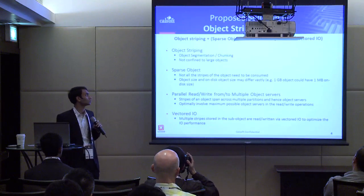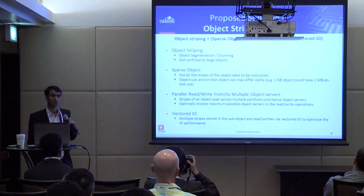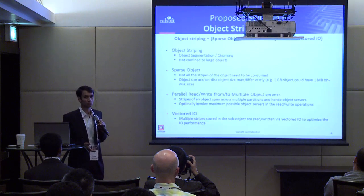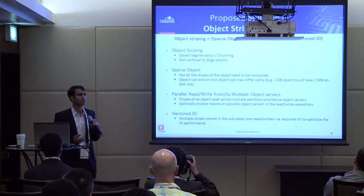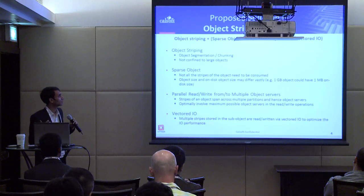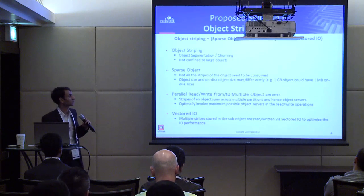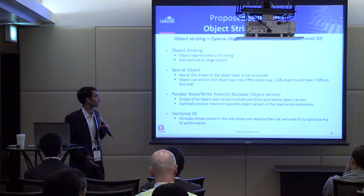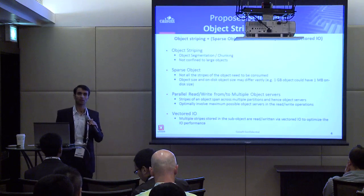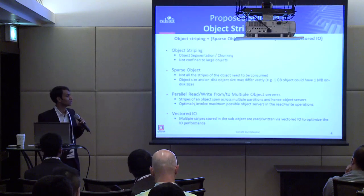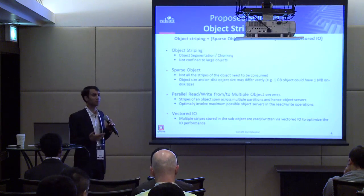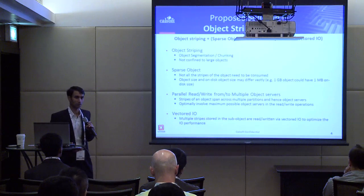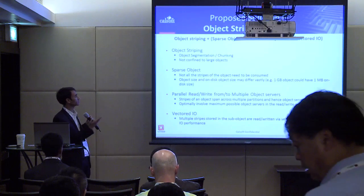The proposed solution: object striping is a technology, not a solution by itself. When blended with sparse objects, parallel reads and writes to multiple object servers, and vectored IO at the object server end, this equation builds up into the solution we are looking for. It can be treated as an equation.